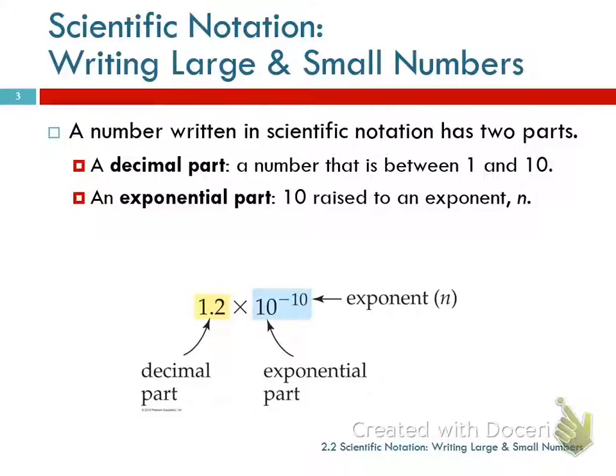So when we write a number in scientific notation, it has two parts. There's the decimal part and the exponential part. So here's an example of a number written in scientific notation. We would read this 1.2 times 10 to the negative tenth power. This yellow is the decimal part before the times sign, and the blue, everything after it, the 10 raised to a power, is the exponential part.